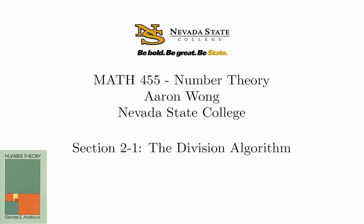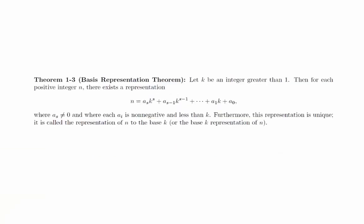Euclid's division lemma, more commonly known as the division algorithm, is an extremely important idea that is used in virtually every area of mathematics. We're going to be working with it in integers, but there are versions that work with polynomials, complex numbers, and other abstract domains. The book's proof of the division algorithm is different from most modern treatments — it's very specific to this presentation because it uses the basis representation theorem from the previous chapter. Recall that the basis representation theorem simply states that we can write any positive integer n in any base k in a unique way. We will prove the division algorithm following the book's presentation, but then we'll also give a more intuitive geometric proof.